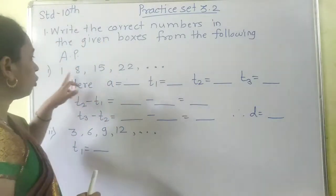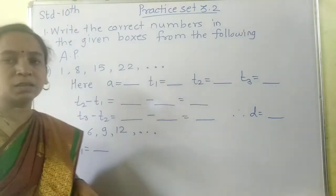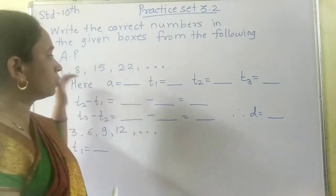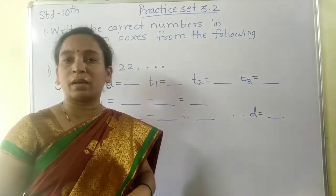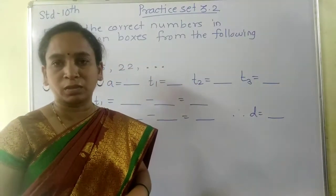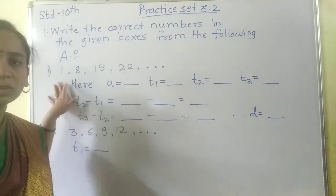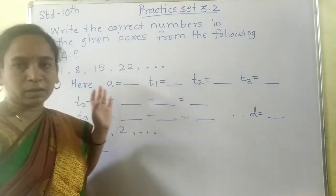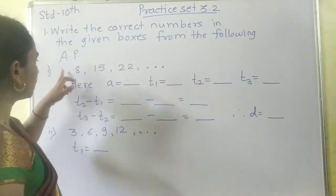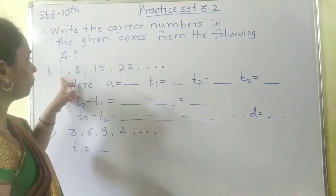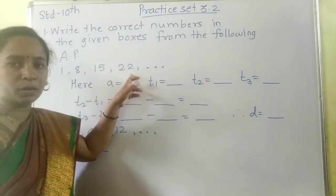Here, if you observe the difference between them, it is 7, and throughout the sequence you will find out the same difference. So let's study the first example based on the activity. The sequence given is 1, 8, 15, 22.